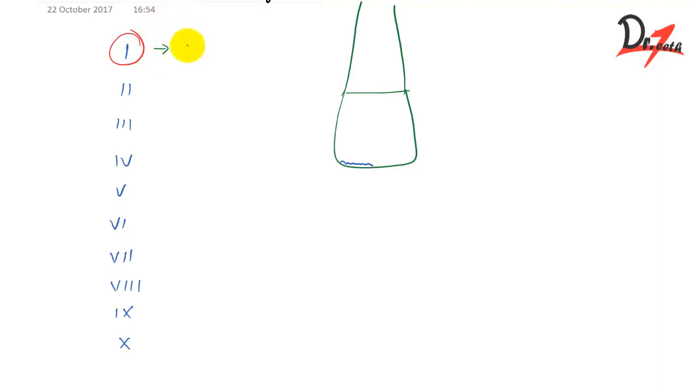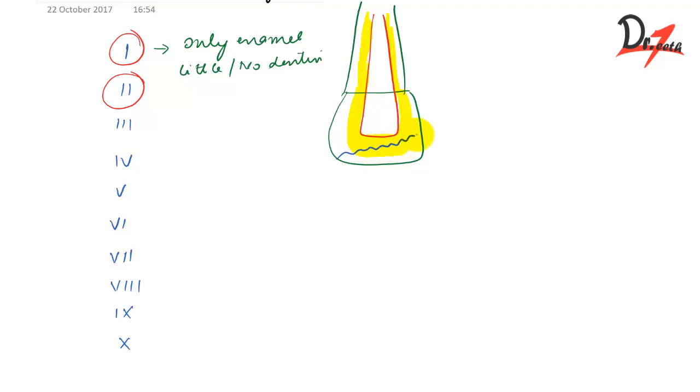Coming to Class 2. In Class 2, there's extensive fracture of crown involving considerable dentin but not exposing the pulp. Here I'm going to draw a pulp also. If this is the pulp and this is the dentin, considerable dentin will be lost in fracture, but the pulp would not be involved. So we have dentin yes, and no pulp in Class 2.